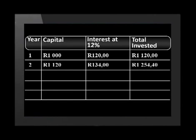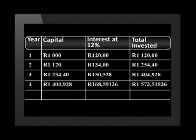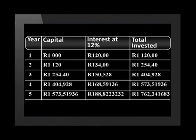Now on to year three, then year four, then year five. Next to year, you write 5. Next to total invested, you write R1,762.34.